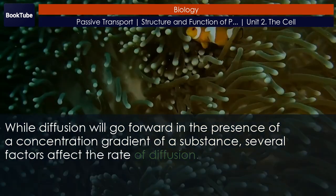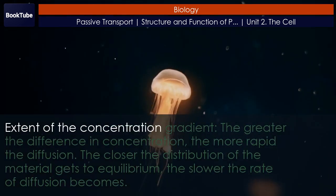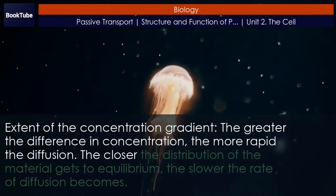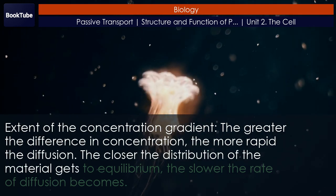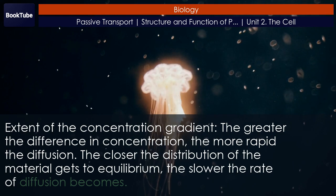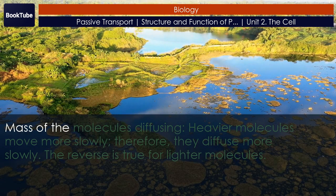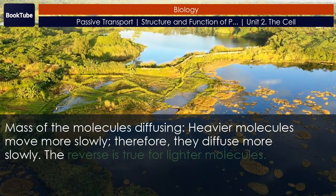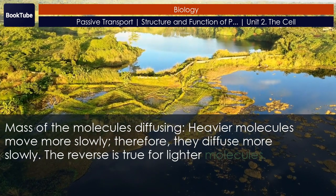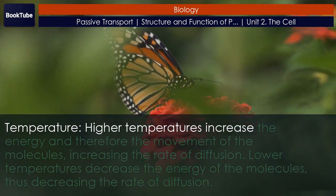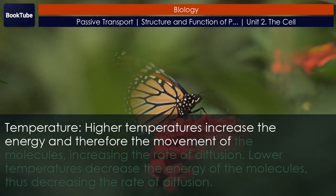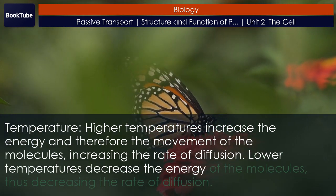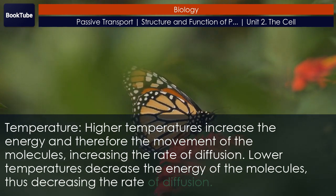Several factors affect the rate of diffusion. Extent of the concentration gradient: the greater the difference in concentration, the more rapid the diffusion. The closer the distribution of the material gets to equilibrium, the slower the rate of diffusion becomes. Mass of the molecules diffusing: heavier molecules move more slowly, therefore they diffuse more slowly. The reverse is true for lighter molecules. Temperature: higher temperatures increase the energy and therefore the movement of the molecules, increasing the rate of diffusion. Lower temperatures decrease the energy of the molecules, thus decreasing the rate of diffusion.